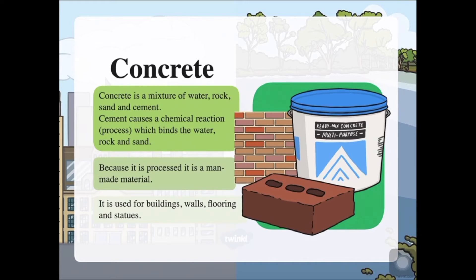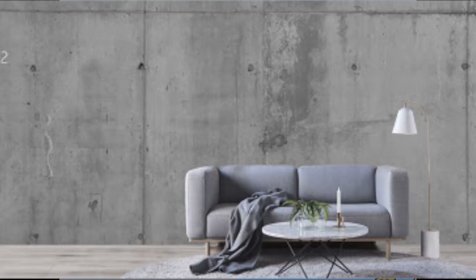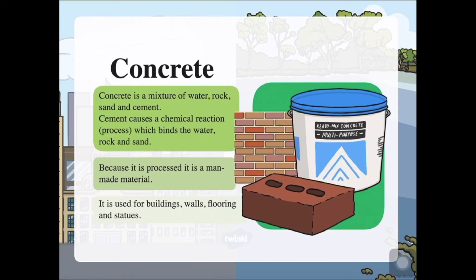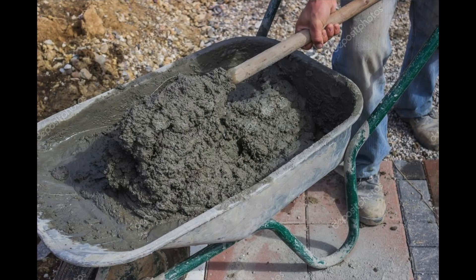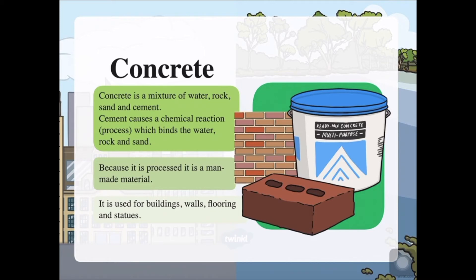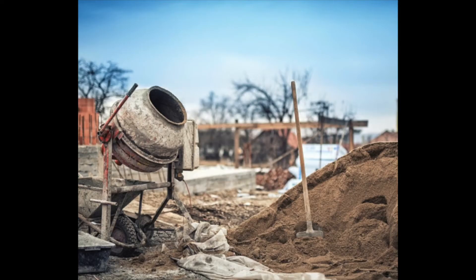How about this material? This is concrete — it is a man-made material. Concrete is used for buildings, walls, floorings, and statues. Concrete is a mixture of water, rock, sand, and cement. Cement causes a chemical reaction — it is a process — and it will bind the water, rock, and sand together. That process of getting this mixture will make something very strong. Because concrete is processed, it is a man-made material. Now, man-made materials are natural materials that are changed through chemical processes by people. So, is glass natural or man-made? Glass comes from sand — it's from the ground. But does it go through any chemical process? Sure it does. So it is a man-made material.